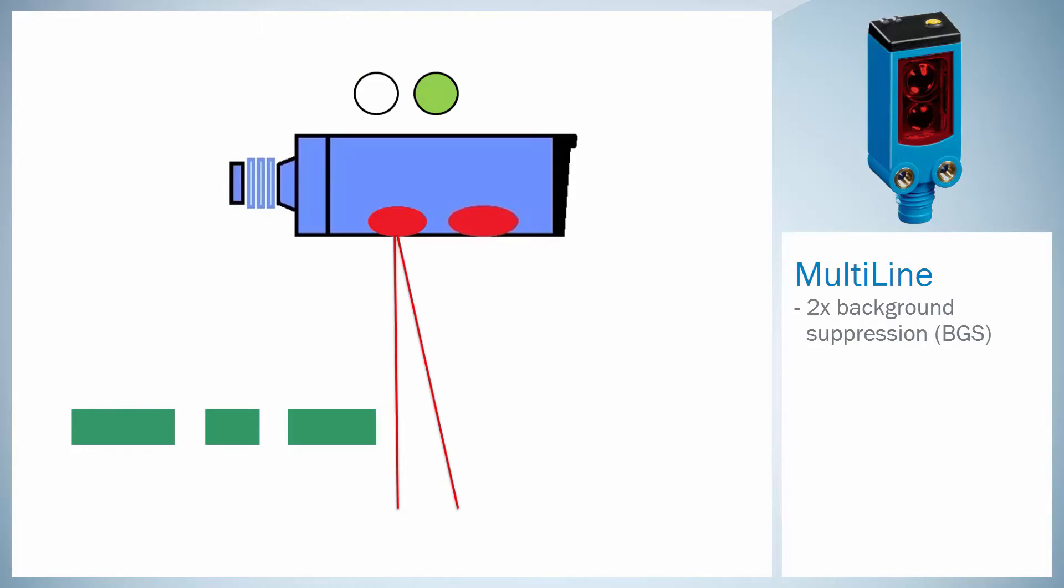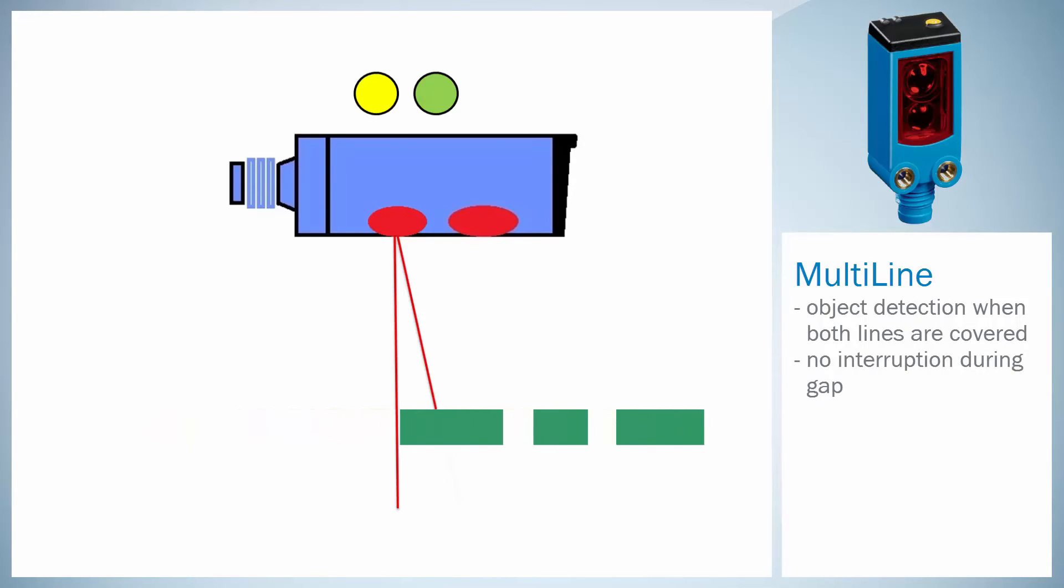Two photoelectric proximity sensors in one housing combined with two line-shaped light spots offer double safety in object detection. The sensor principle is simple. When one or more beams are interrupted, the multi-line recognizes an object. Only when both beams are no longer interrupted, the sensor switches off.